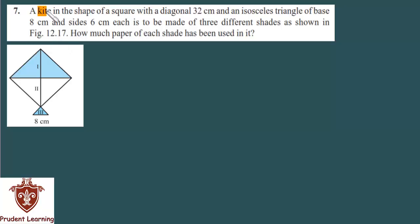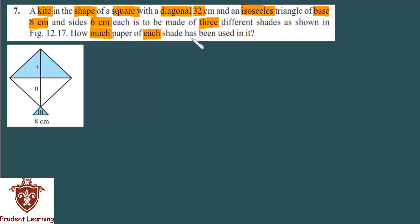A kite in the shape of a square with diagonal 32 cm and an isosceles triangle of base 8 cm and sides 6 cm each is to be made of 3 different shades as shown in the figure. How much paper of each shade has been used in it? The kite is made of two parts: the top part is a square shape, and the small tail part is an isosceles triangle.